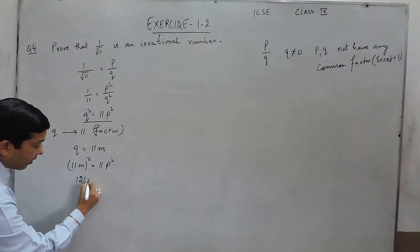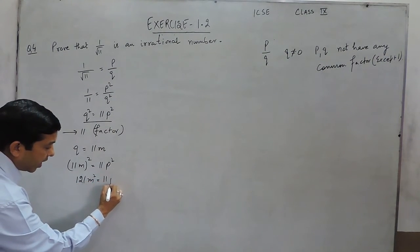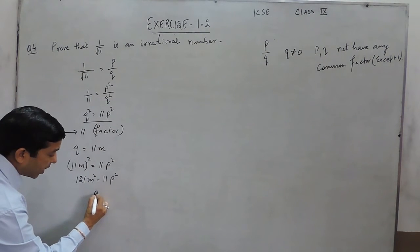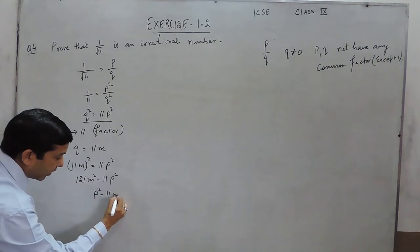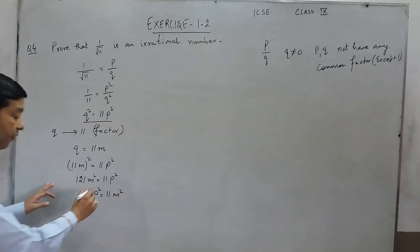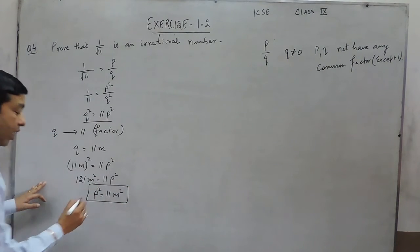Further solving it, 121M square is equal to 11P square, or P square can be written as 11M square.